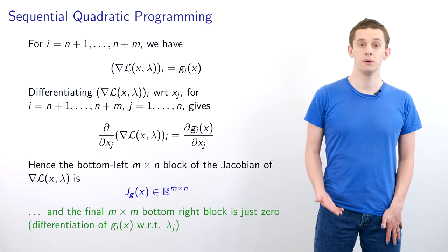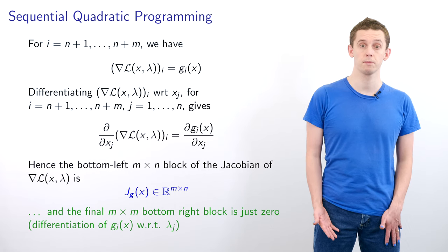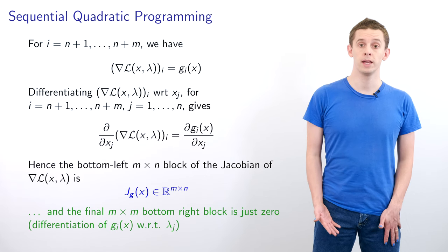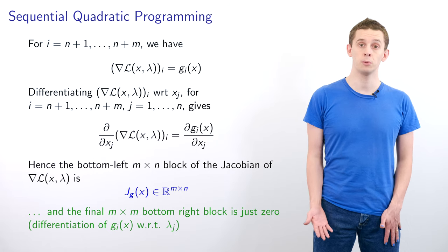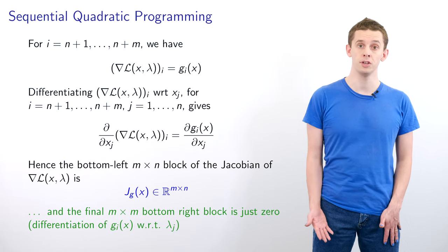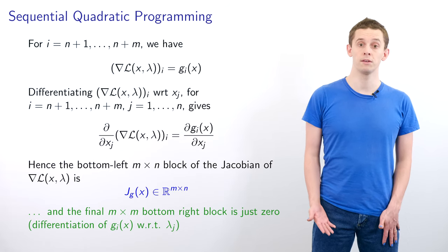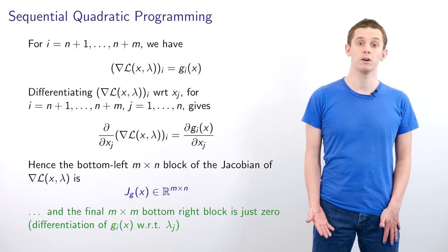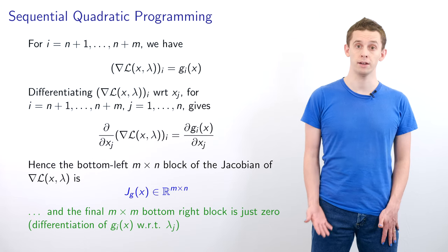If we differentiate the i-th component of the gradient of L for this range of i with respect to x_j, we'll get ∂/∂x_j of the i-th component of the gradient of L and that will be equal to ∂g_i/∂x_j. That will then give us that the bottom left m×n block of the Jacobian is given by J_g(x).